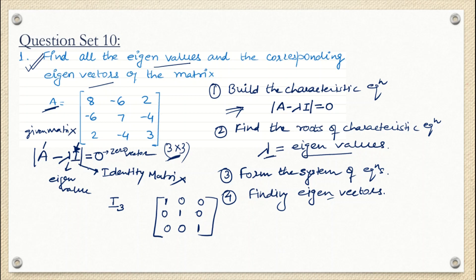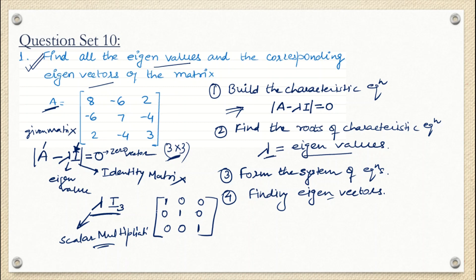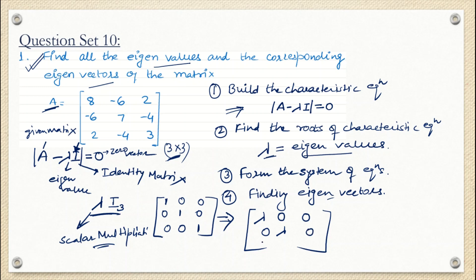The next step is to multiply λ into this identity matrix — this is called scalar multiplication. Lambda will get multiplied in all places: λ × 1 = λ, and λ × 0 = 0. So in the resulting matrix, all the diagonal places have λ instead of 1, and all off-diagonal places remain 0.